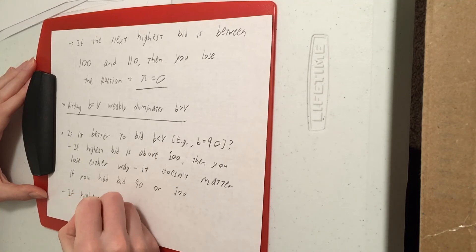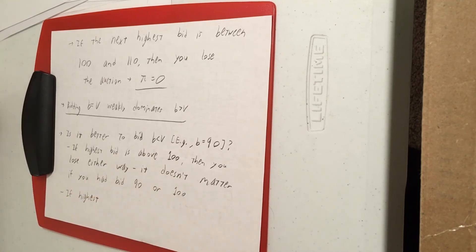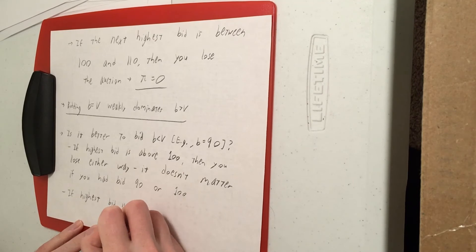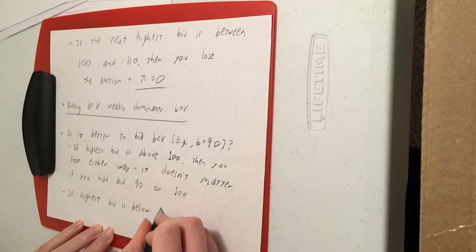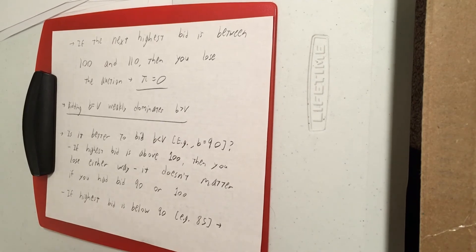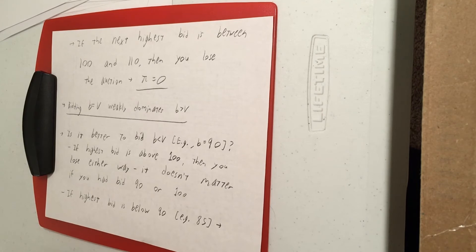Now say the highest bid had been something below 90 — maybe the next highest bidder chose 85. In that case it also does not matter whether you bid 90 or 100. Either bid would suffice to win the auction, and since you pay the second-highest bid you'd be paying 85 either way — same payoff either way.